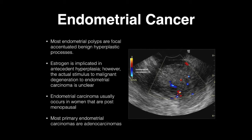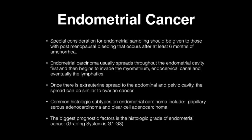Most endometrial polyps are focal, accentuated, benign hyperplastic processes. Estrogen is implicated in antecedent hyperplasia; however, the actual stimulus to malignant degeneration of endometrial carcinoma is unclear. Endometrial carcinoma usually occurs in postmenopausal women. Most primary endometrial carcinomas are adenocarcinomas. Special consideration for endometrial sampling should be given to those with postmenopausal bleeding occurring after six months of amenorrhea.